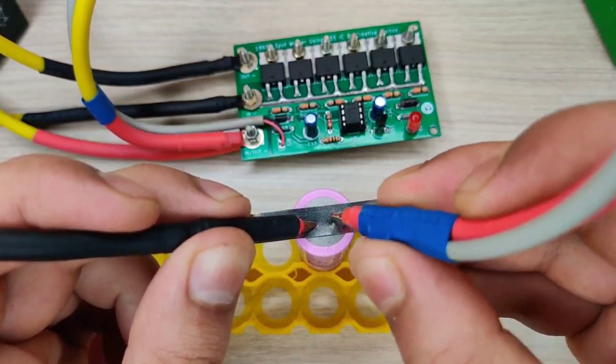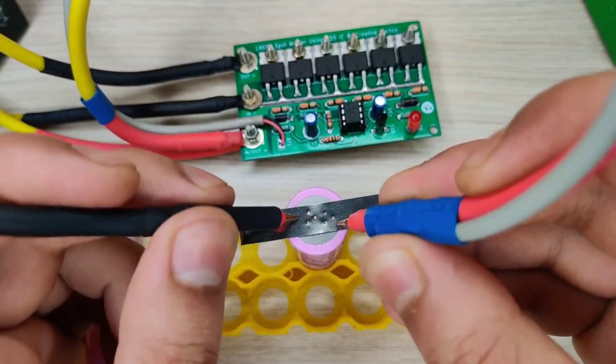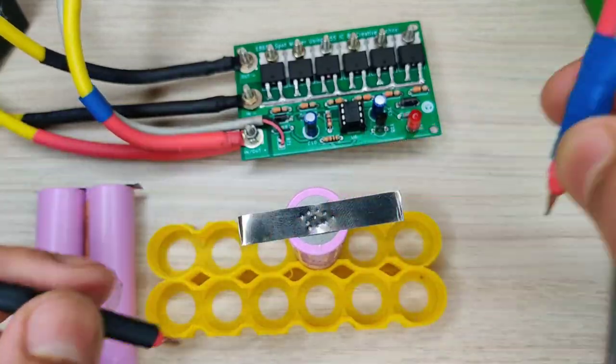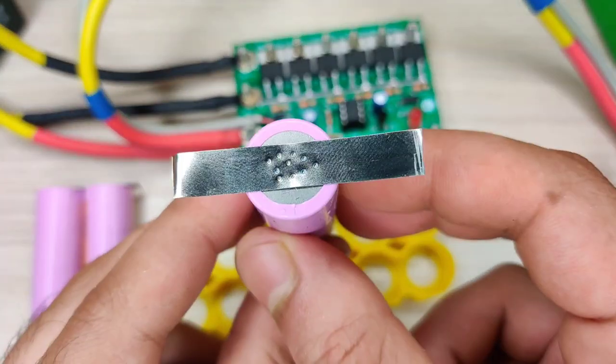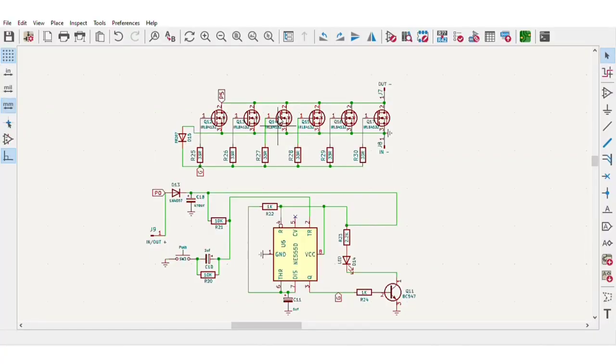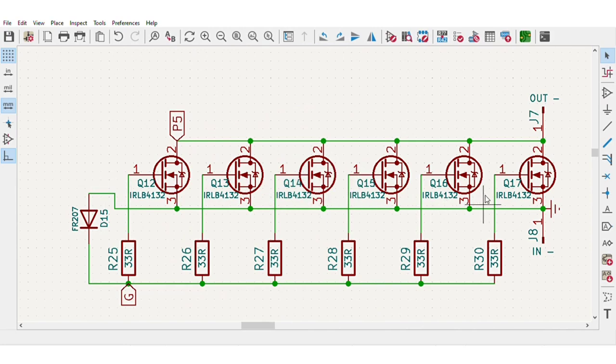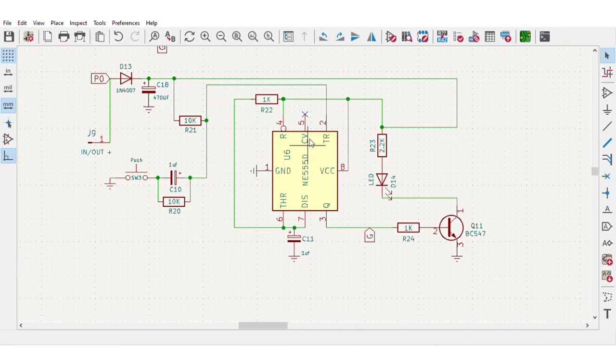Hi guys, today in this video I will be making a simple and powerful spot welder machine using some MOSFETs and 555 timer IC. In this circuit I have used six pieces of powerful IRLB4132 MOSFETs that can give up to 600 amperes of pulse current. This circuit is simply controlled by this 555 timer IC.